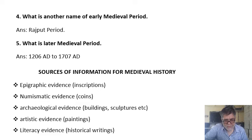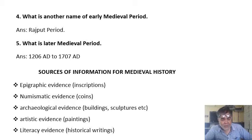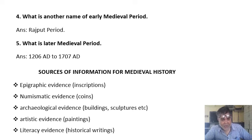Now, the sources of information for medieval history. Epigraphic evidence, also known as inscriptions. Numismatic evidence — numismatic is the study of coins. Archaeological evidence includes buildings, structures, etc. Artistic evidence includes paintings, rock paintings, etc. Literary evidence means books.